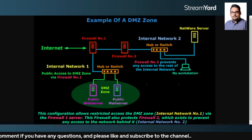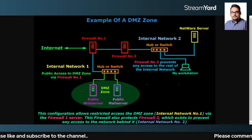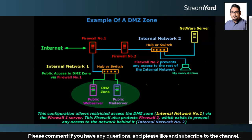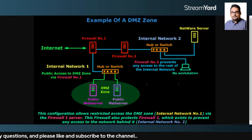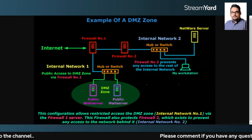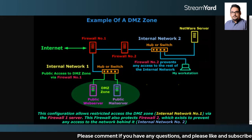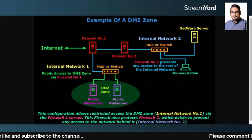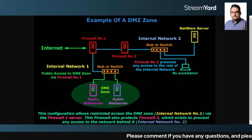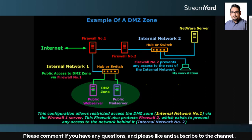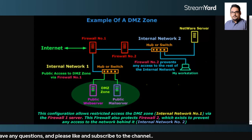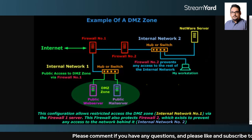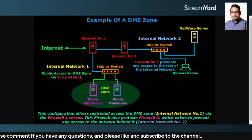DMZ acts as a separate protection layer between the public internet and the private network. It's very important to understand from a security standpoint — it may come up in interviews. Key benefits: first, isolation — keeping potential attackers separate from your internal network; second, reducing control scope — even if someone gains control of external systems, they still cannot access internal resources; third, whenever you want to host corporate resources on the internet, you need a DMZ.